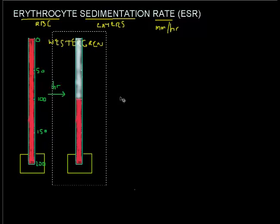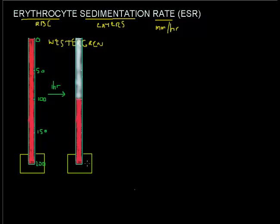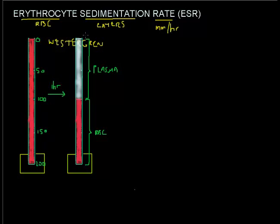After one hour you have a layer of red blood cells at the bottom — these have settled down with, amongst others, gravity — and at the top you have some plasma. Note that you need a tube with an anticoagulant, otherwise you'll end up with a clot rather than a nicely layered result. We measure the ESR by taking the distance in millimeters from the zero point down to the interface between the red blood cells and the plasma, which in this case is around 100.